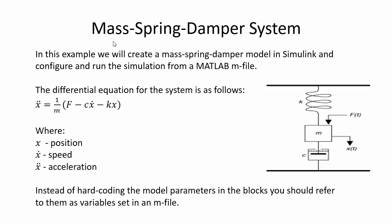In the next example we simulate a mass-spring-damper system, described by a second-order differential equation where x is position, x-dot is speed, and x-double-dot is acceleration. We'll implement this in Simulink using the data-driven approach: create the model in Simulink and define the parameters in a MATLAB script. First we need a block diagram.